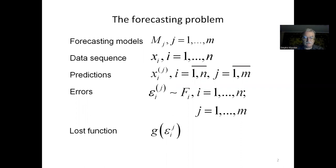The problem of forecasting error estimation is formulated in the following way. Let M_j, where j varies from 1 to m, be forecasting models producing predictions x_ij of data sequence x_i, where i varies from 1 to n, and epsilon_ij, where i varies from 1 to n and j varies from 1 to m.